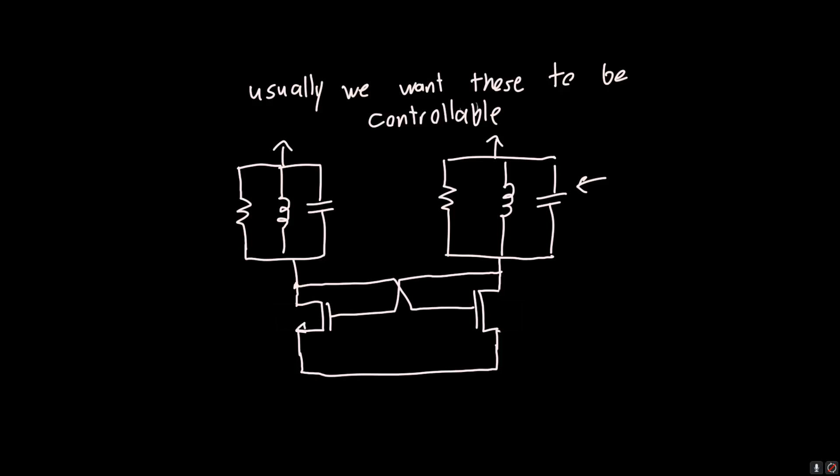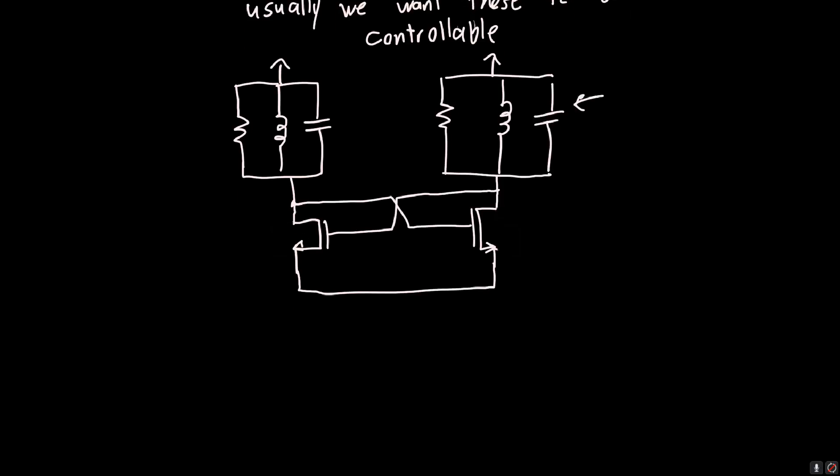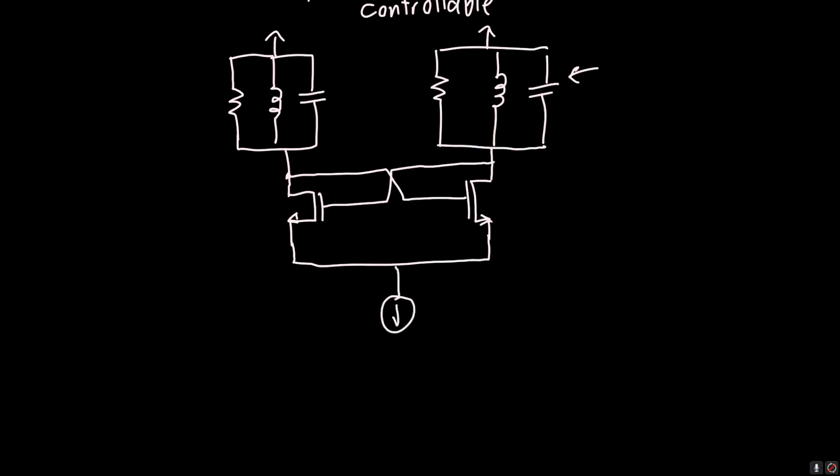So instead of just connecting these directly to ground, what we're going to do, is we're going to add a biasing current source. Call this ISS. What this does is ISS sets the maximum current, which can flow through one of these MOSFETs. So at most we can have ISS flowing through one of these MOSFETs. It might be flowing through this one, it might be flowing through this one, and it's going to oscillate with time.